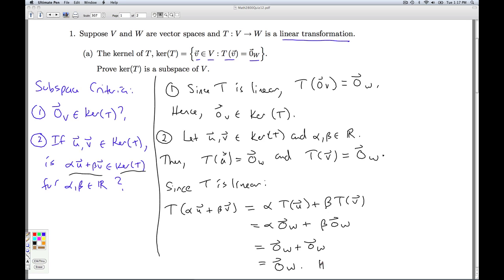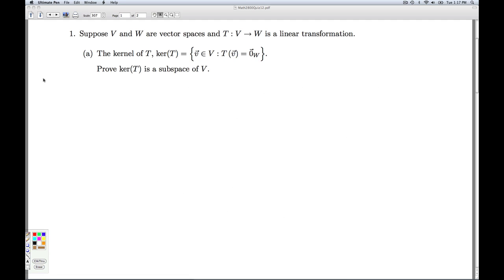Hence, alpha U plus beta V is in the kernel of T, and we're done. Since the kernel of T satisfies the subspace criteria, it is a subspace of V. That'll do it for part A.